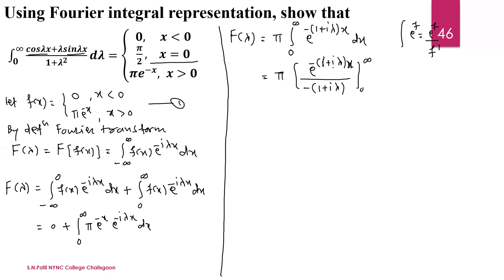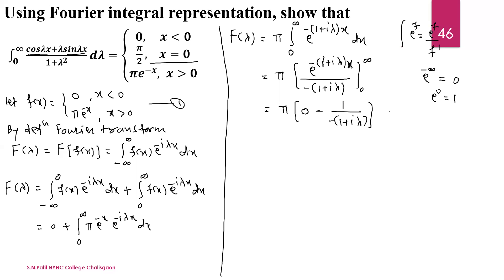When we substitute the upper limit x = ∞, we get e^(−∞) which equals 0. Subtracting the lower limit at x = 0, we get e^0 = 1. So the result is 0 minus 1 divided by −(1 + iλ), which gives π times 1/(1 + iλ).